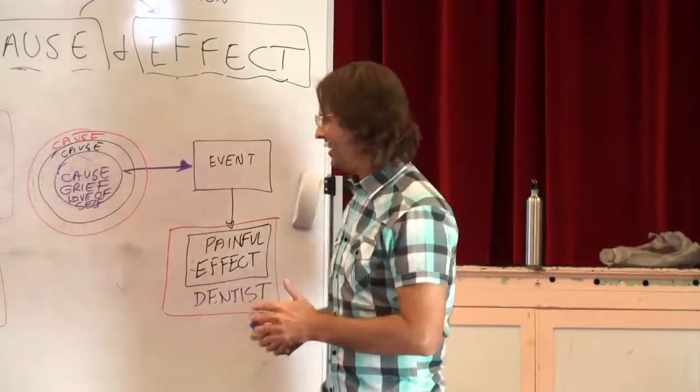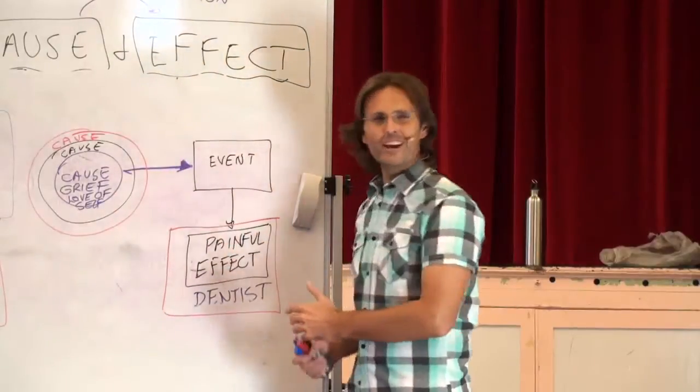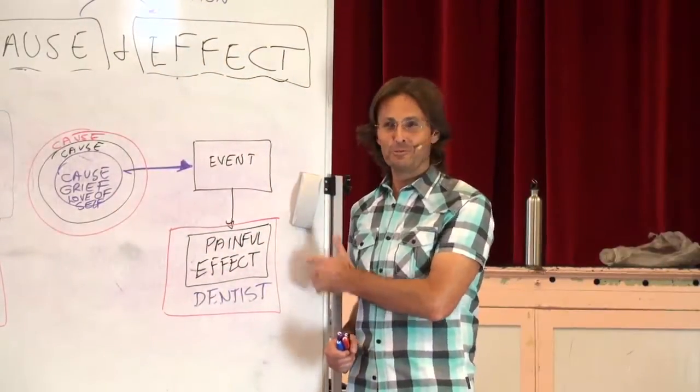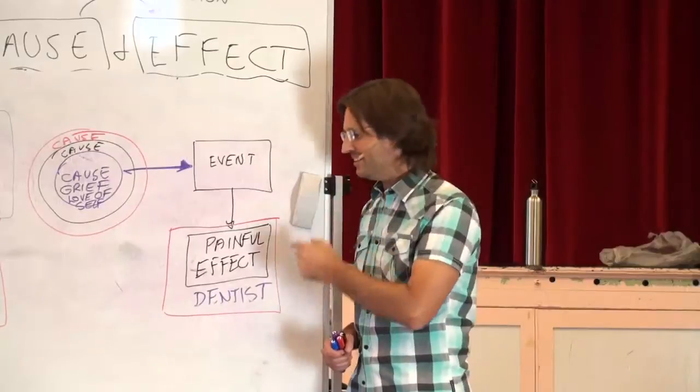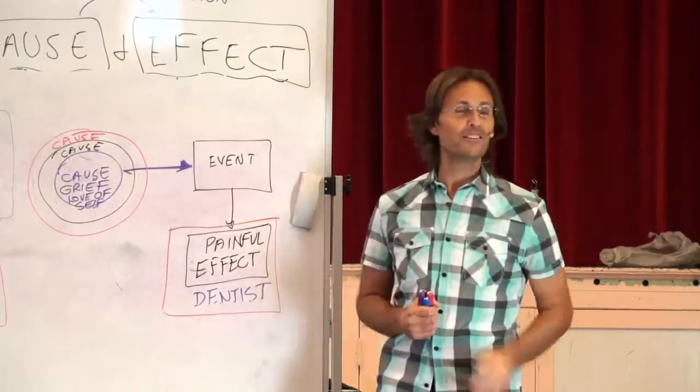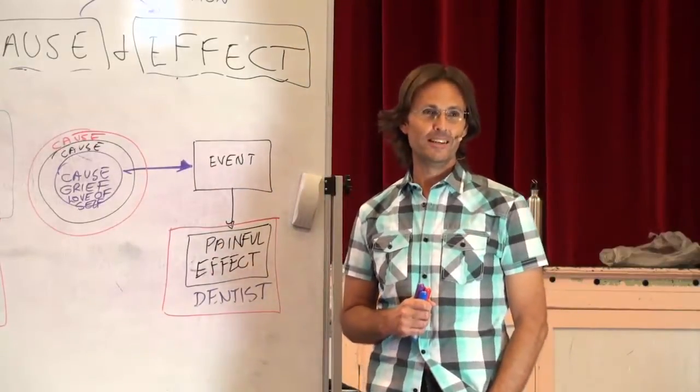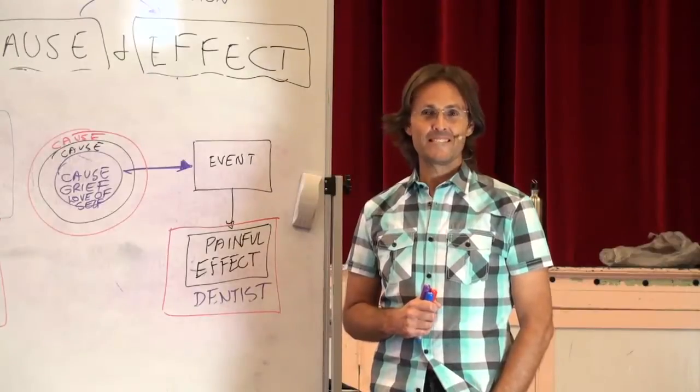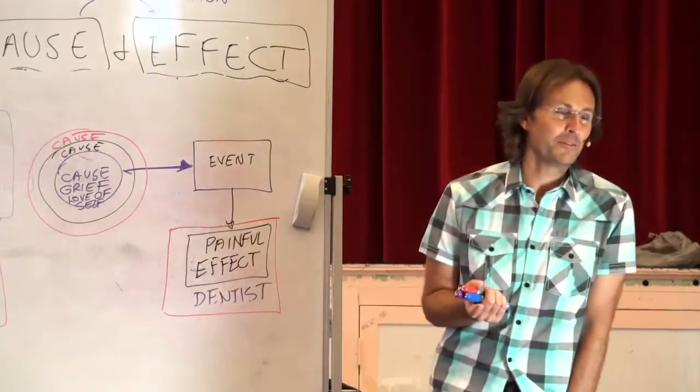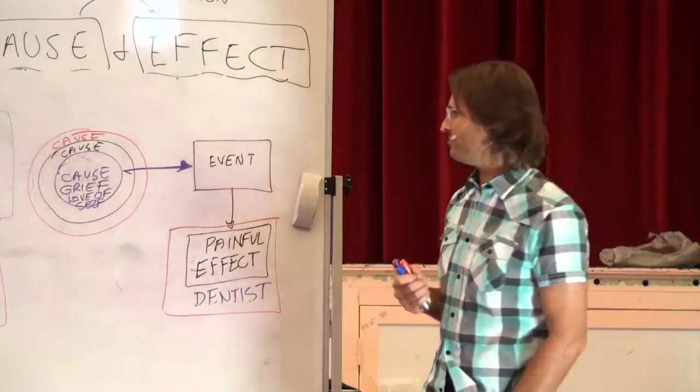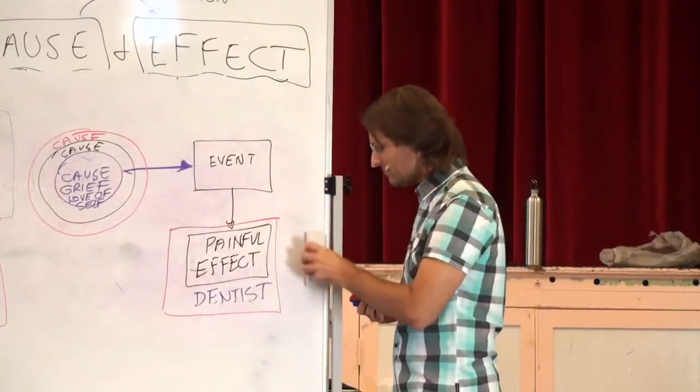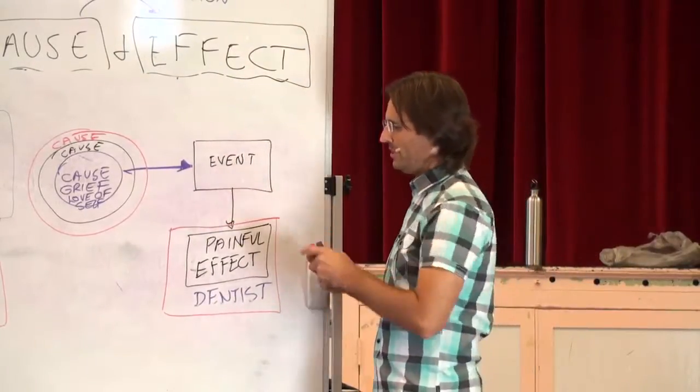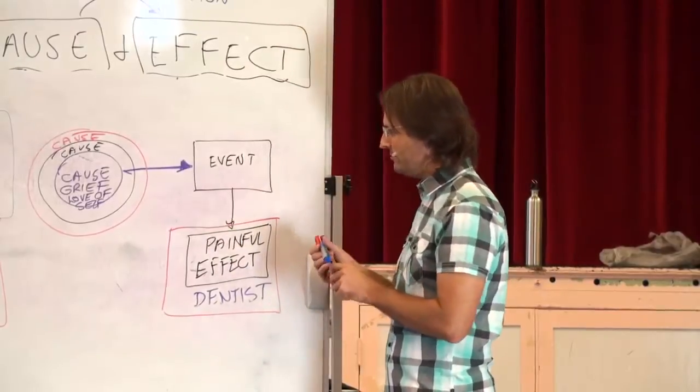That's how strong we have the denial of that emotion. We'd prefer to have a very painful, and often what we've considered to be a traumatic event occur, then we would actually deal with the underlying emotion that caused it. That's pretty intense when you think about it. That's how strongly we want to deny it.